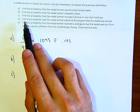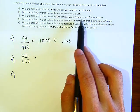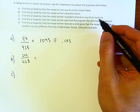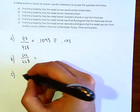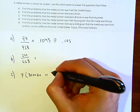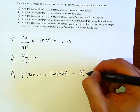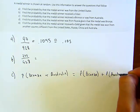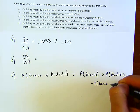Letter C states: find the probability that the medal winner received the bronze or was from Australia. Notice that this is an example of not mutually exclusive, because they could happen at the same time. So the probability of bronze or Australia equals the probability of bronze plus the probability of Australia, minus the probability of bronze and Australia.